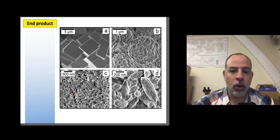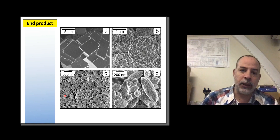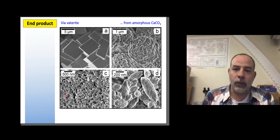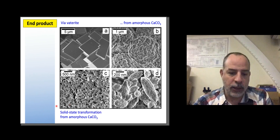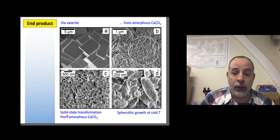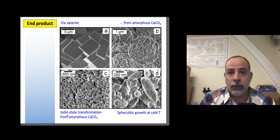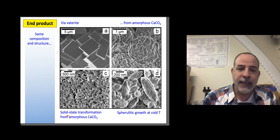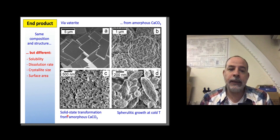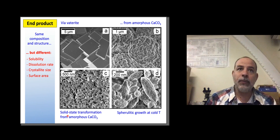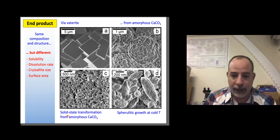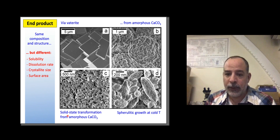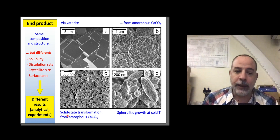Here are some examples. All four pictures show only calcium carbonate — only calcite. The first is via vaterite, the second from amorphous calcium carbonate directly, the third via solid-state transformation from amorphous calcium carbonate, and the fourth via spheroidal growth at cold temperature. They all have the same composition and structure, but because of different sizes and shapes, these minerals will have different solubilities, dissolution rates, crystallite sizes, and surface areas. If you don't know what you are producing and don't control your crystallization mechanism, you may end up with very different types of calcite, leading to different analytical results and experimental outcomes.